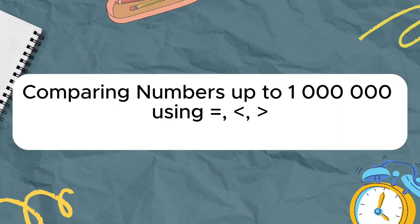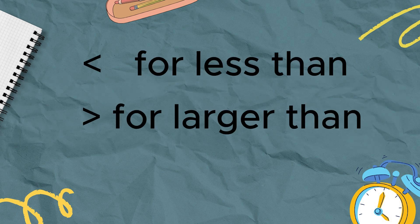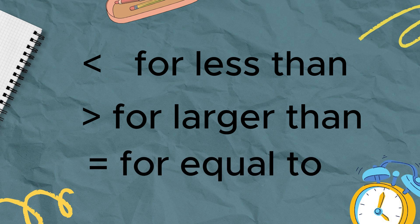Based on their values, numbers can be compared to determine if they are equal, less than, or greater than one another. The mathematical symbols for less than, for greater than, and for equal to are used to compare numbers.